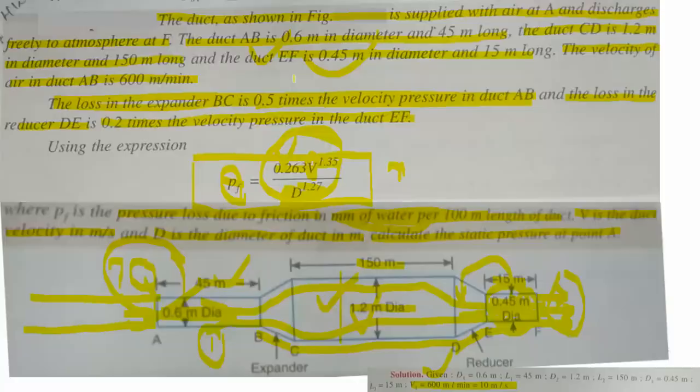Pressure loss in reducer DE equals 0.2 times the velocity pressure head in EF section. The velocity pressure head in EF is 19.4 mm of water. So loss in DE = 0.2 × 19.4 = 3.88 mm of water. Losses in BC and DE sections are both completed.